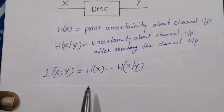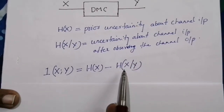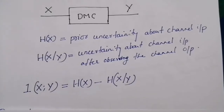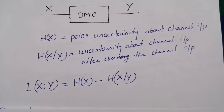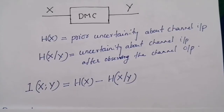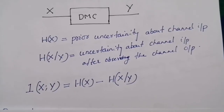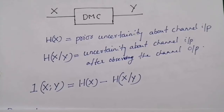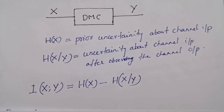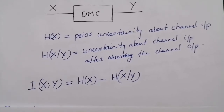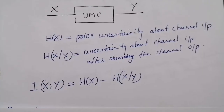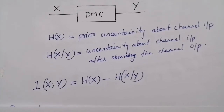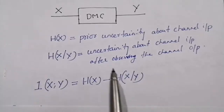We know that h(x) is very much higher compared to h(x|y). Thus mutual information I(x;y) is the uncertainty about the channel input that is resolved by observing the channel output, or it is the average amount of information gained from the channel. In other words, mutual information is the average amount of information transferred through this particular channel.